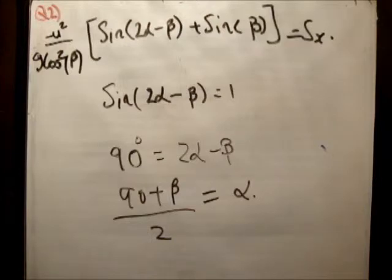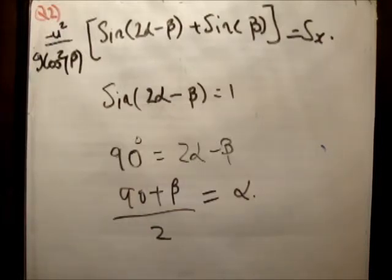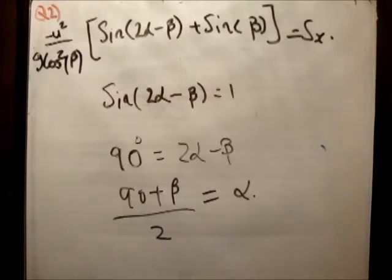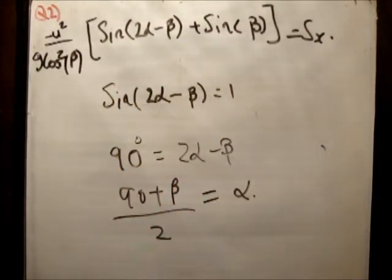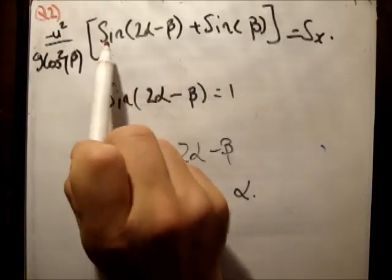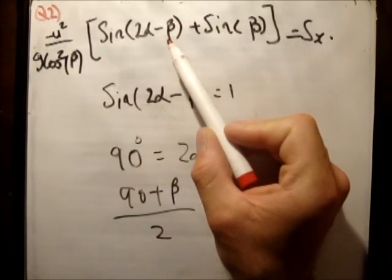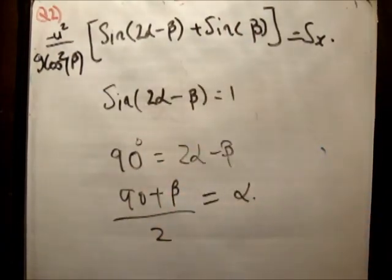That's probably the most challenging question we've done in all 80 pages of the book. The reason it was challenging is because the manipulation of the algebra and the trigonometry is quite tricky. If you found it very difficult, I wouldn't worry too much — I'd be shocked if a question like that came up in the exam. To summarize: sine is maximum when equal to 1, so to maximize the range we set sine(2alpha − beta) = 1, giving alpha = (90° + beta) / 2. Thank you for watching — please pass it on to your friends and subscribe to my channel.